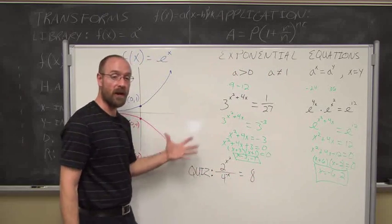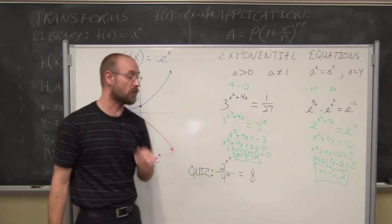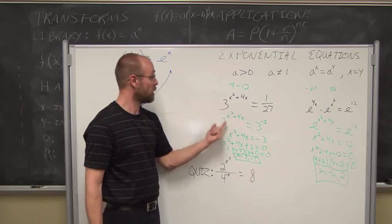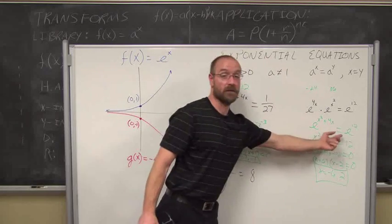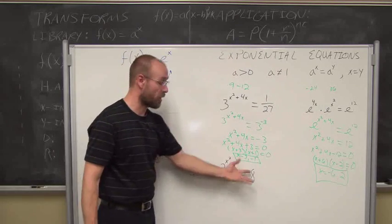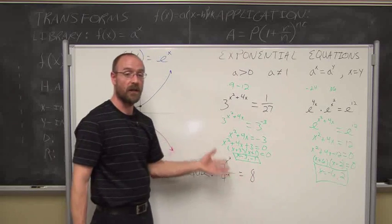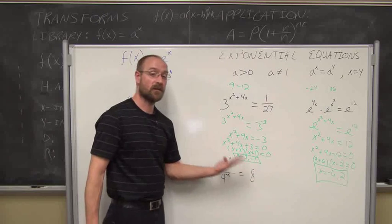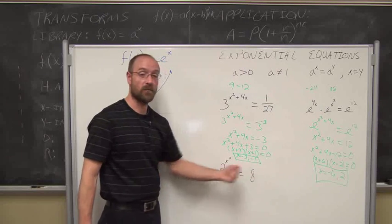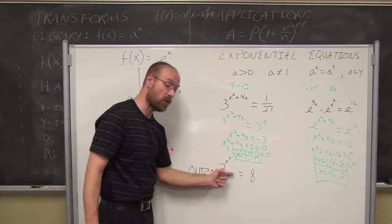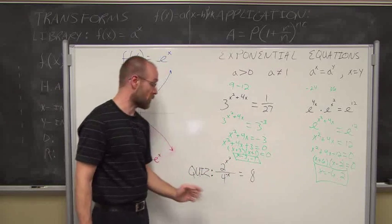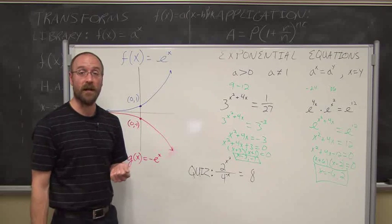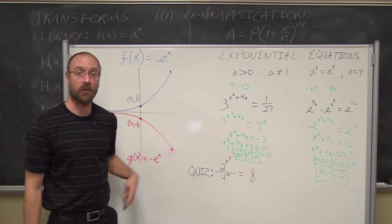Here's your quiz — try this for yourself. Make sure you truly understand your rules of exponents. The goal is to write 2, 4, and 8 all with the same base, then use your rules of exponents and the quotient rule to simplify and build your equation. This has been Section 6.3, Exponential Functions. Thank you for watching.